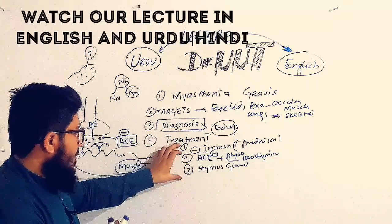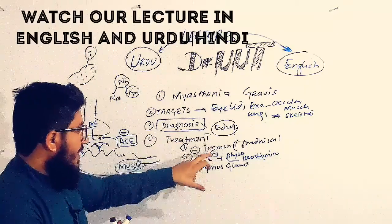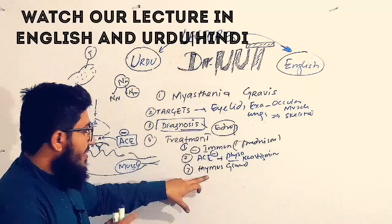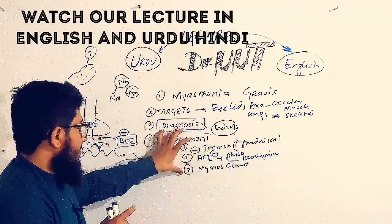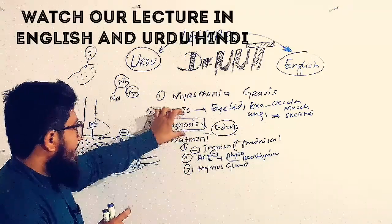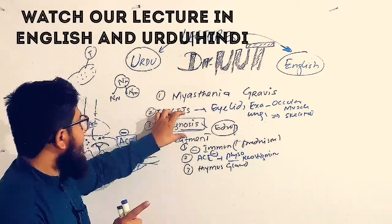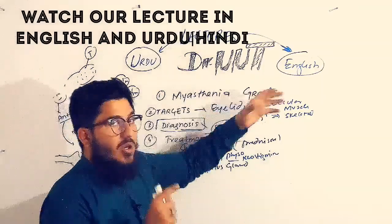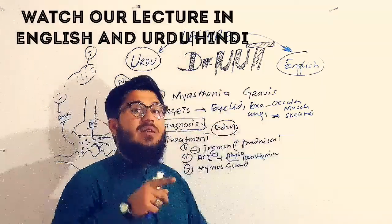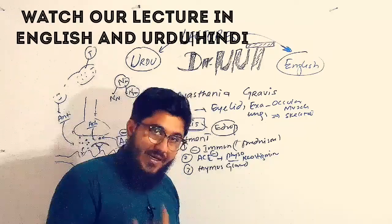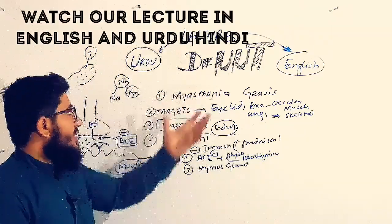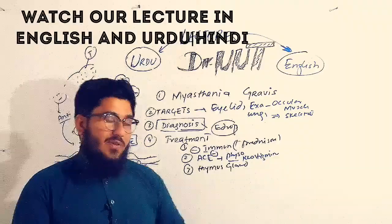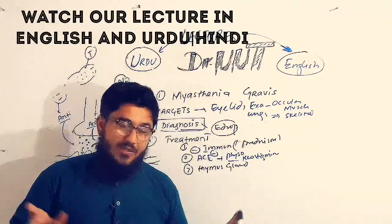So you can overcome Myasthenia Gravis — the muscle weakness or abnormal muscle weakness — through this treatment strategy: immunosuppressants, acetylcholinesterase inhibitors, and thymus gland removal. Diagnosis is done by the edrophonium Tensilon test. The target organs are the eyelids, extraocular muscles, lungs, and skeletal muscles. Myasthenia Gravis itself means abnormal muscle weakness.